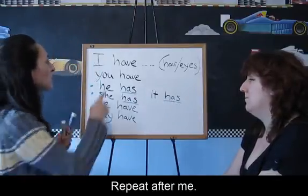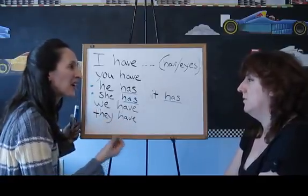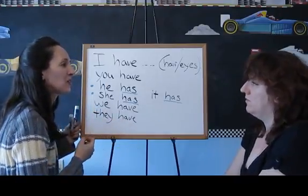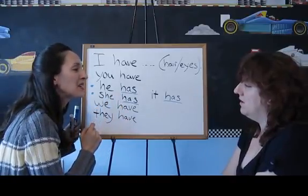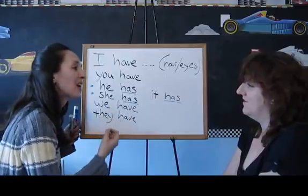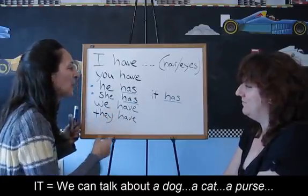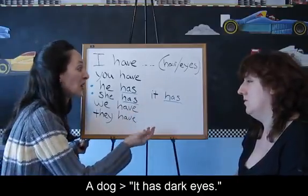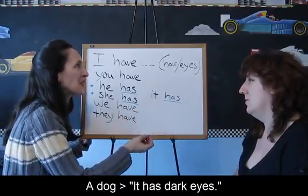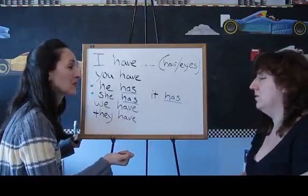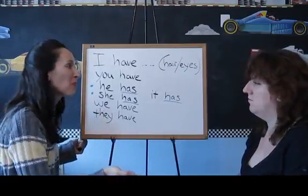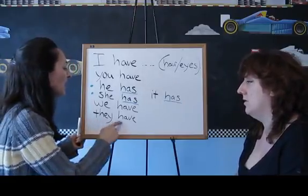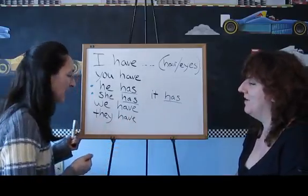It has. Repeat after me. I have. I have dark hair. You have. You have dark hair. He has blue eyes. She has light hair. It has dark eyes — we can talk about a dog or a cat. We have black wallets. They have money.